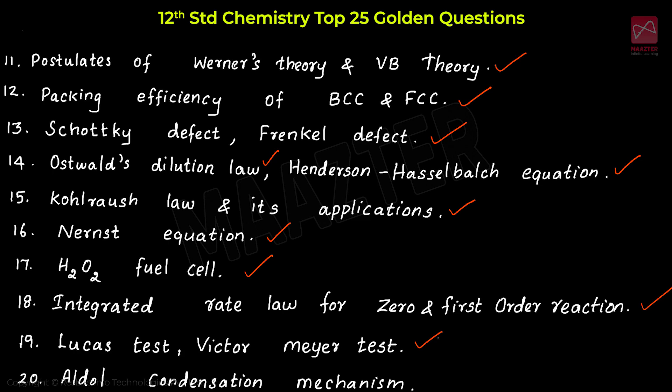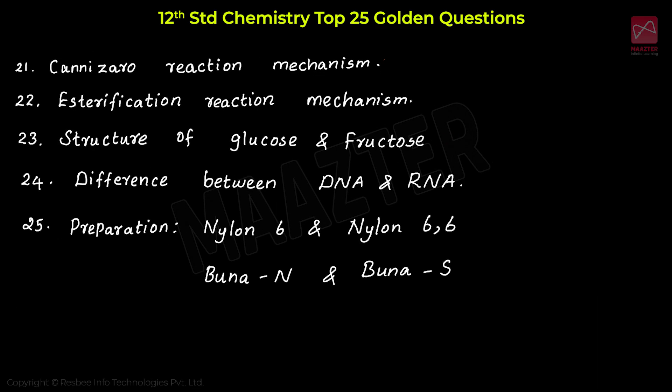Then Unit 12, carbonyl compounds and carboxylic acids: the very important golden questions are the Aldol condensation mechanism, the Cannizzaro reaction mechanism, and the esterification reaction mechanism. These 3 questions are very important and golden questions from Unit 12.